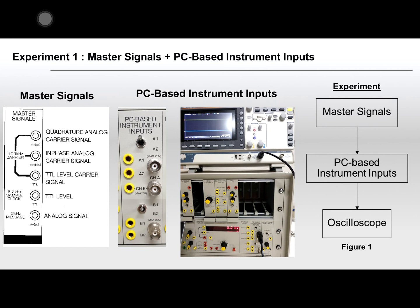In the first experiment, you will learn how to use the Master Signal Module and the PC-based Instrument Input Module. On the left hand side is the Master Signal Module. In this module, you can generate the message with a 2 kHz frequency, or you can generate your carrier with a 100 kHz frequency. In the middle is the PC-based instrument input.